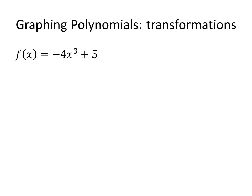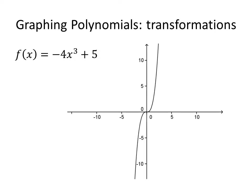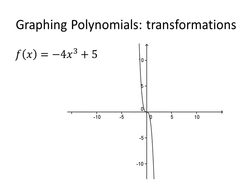We can also graph a function by applying transformations step by step. Starting with the base function x cubed, we first reflect it across the x-axis because of the negative sign. Then we stretch it by a factor of 4, making it skinnier. Finally, we shift the graph up by 5. This gives us the graph of negative 4x cubed plus 5.